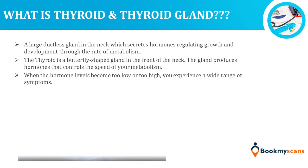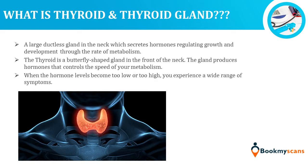What is thyroid and thyroid gland? A large ductless gland in the neck which secretes hormones regulating growth and development through the rate of metabolism. The thyroid is a butterfly-shaped gland in the front of the neck. The gland produces hormones that control the speed of your metabolism.